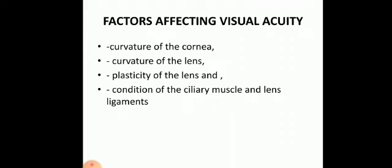The third category is stimulus factors, where the size of the object, the distance of the object from the eye, and the color of the object are considered. Visual acuity increases as the size of the object increases and as the distance of the object from the eye decreases.